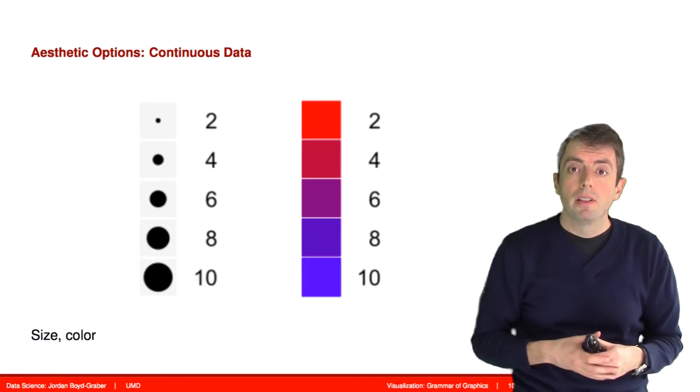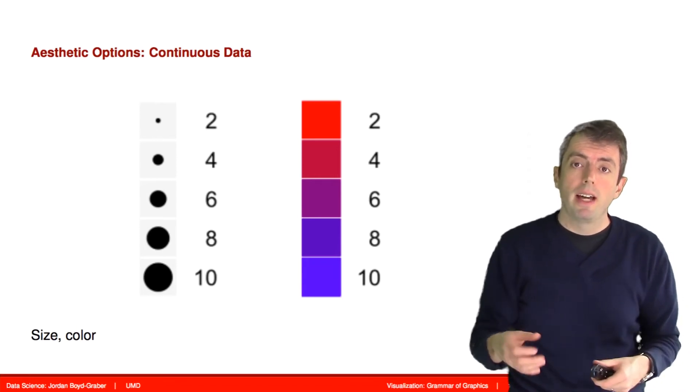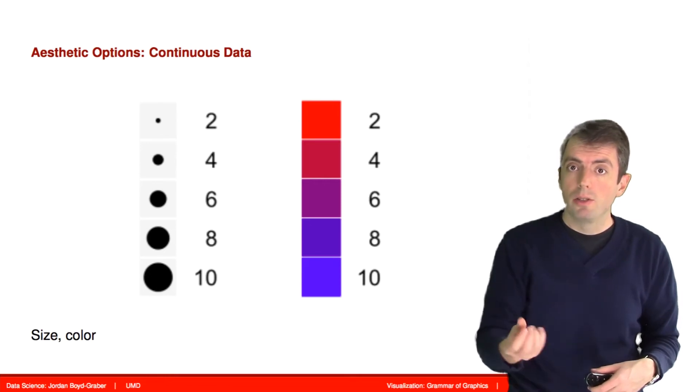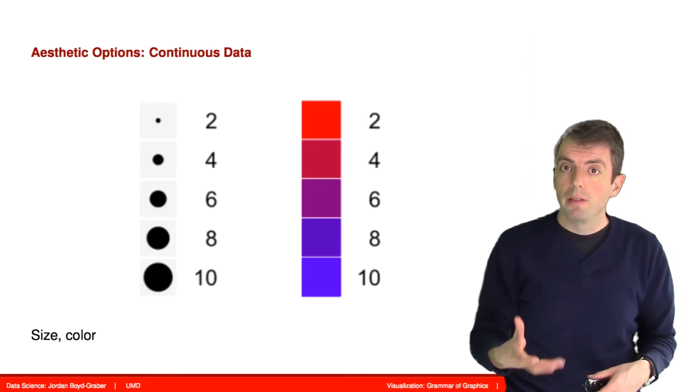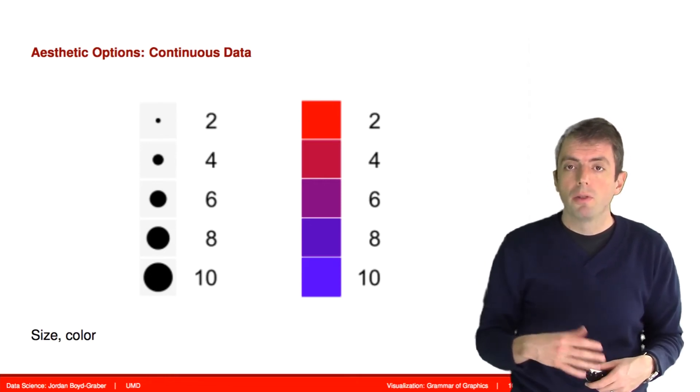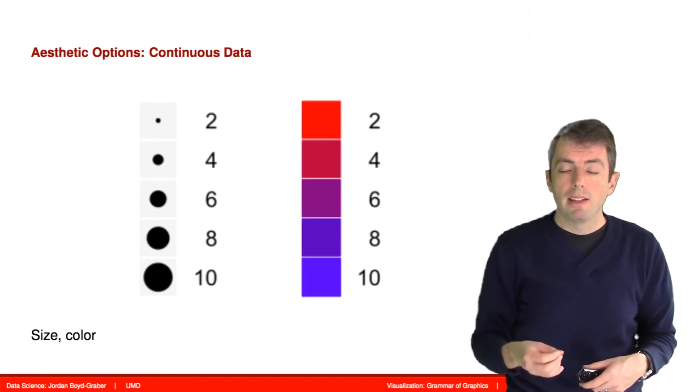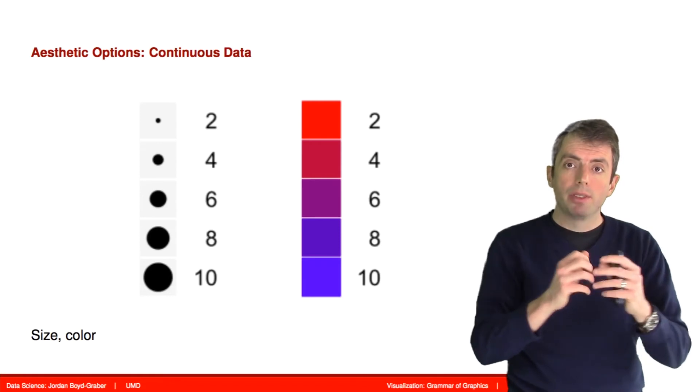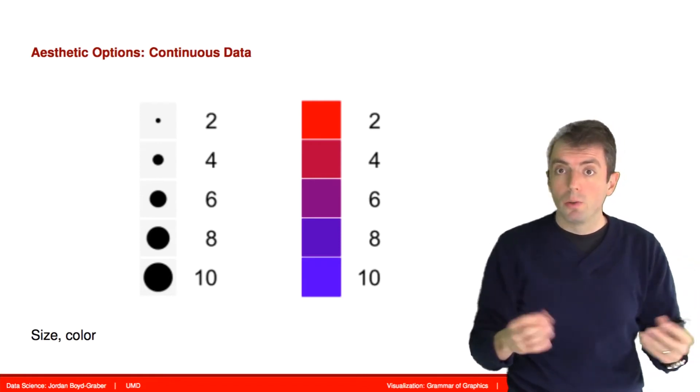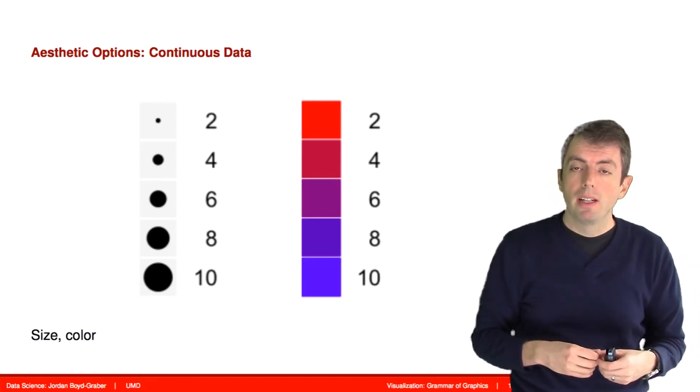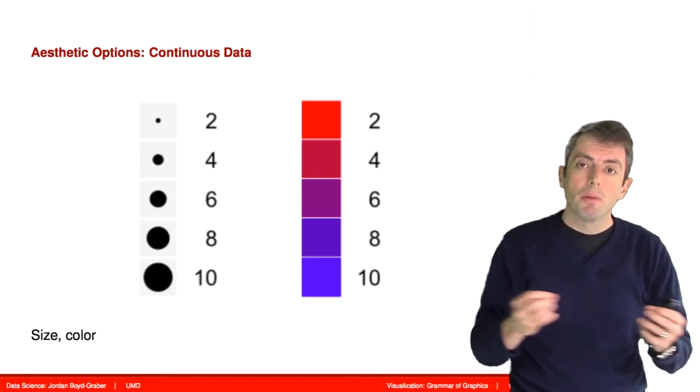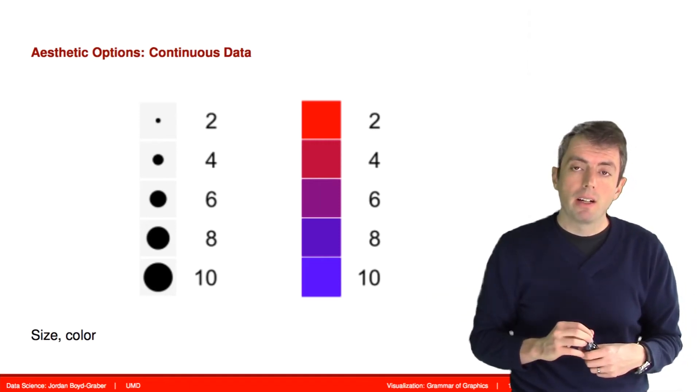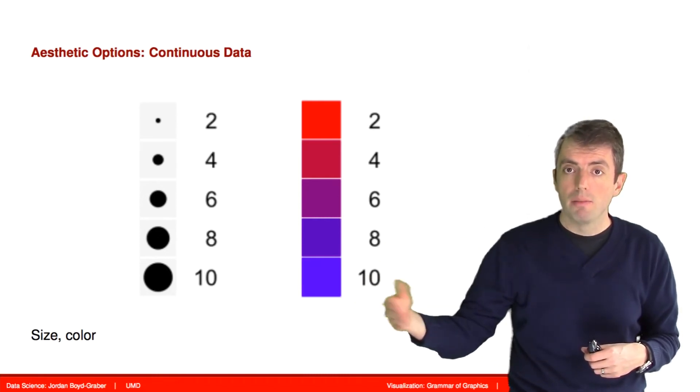The nice thing about these frameworks is that when you choose to apply some aesthetic to a point, it makes reasonable selections for you. For example, if you tell it the size of a point and that's associated with continuous data, it will size a ball or a square to a size proportional to whatever value is associated with that column.